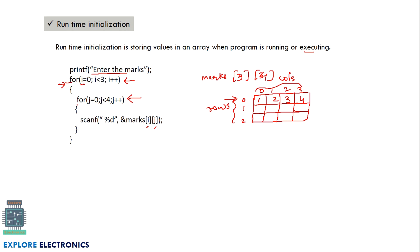Once j reaches 4 the condition is not satisfied, so we exit the inner loop and increment i to move to the second row. The inner loop again runs four times to fill the second row's values. When i increments to 2 we fill the third row, and when i becomes 3 the outer condition is not satisfied and we exit. This is runtime initialization.